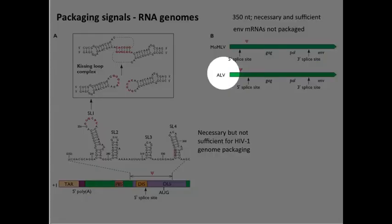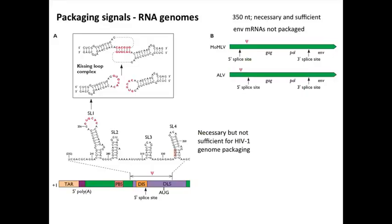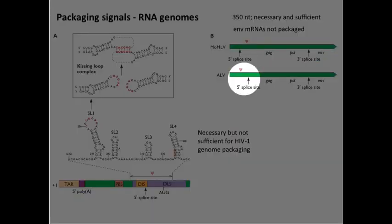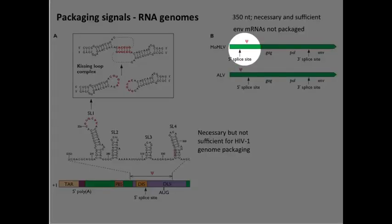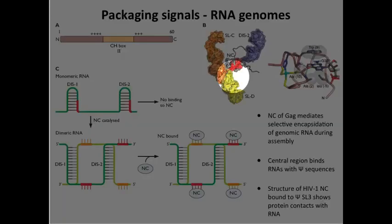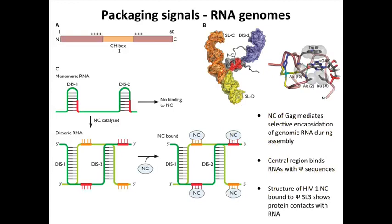Unfortunately, that doesn't apply for all retroviruses. Here is one where the PSI signal is upstream of the 5' splice site. So this is also necessary and sufficient, but in fact envelope messages don't get packaged — so there's something else regulating that as well. This is a cool example of excluding envelope from the virion, but the other case is not. Biology is not always neat; there are always exceptions to every rule.